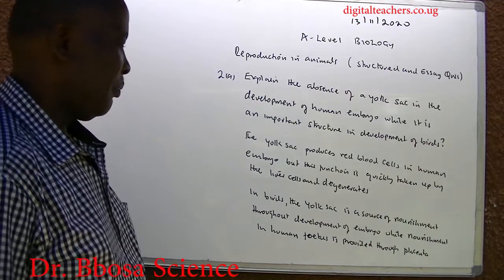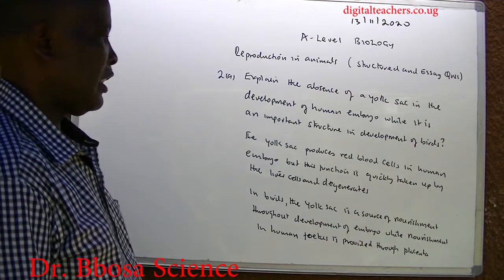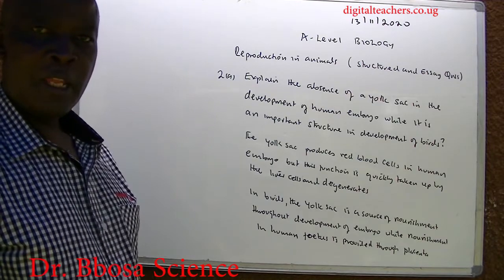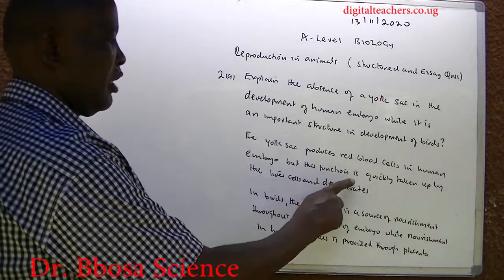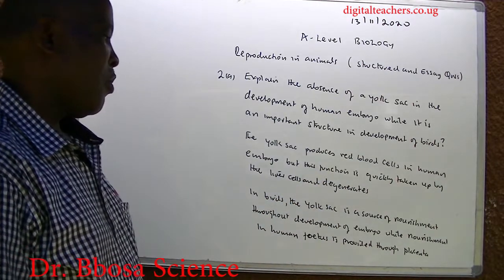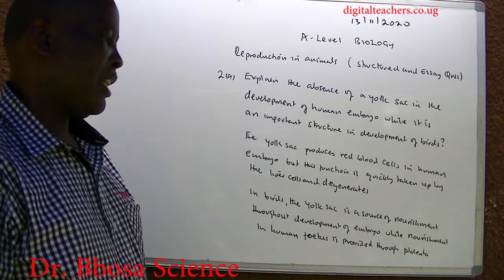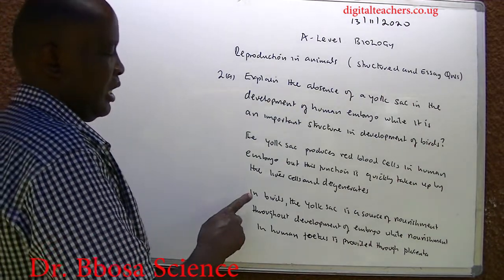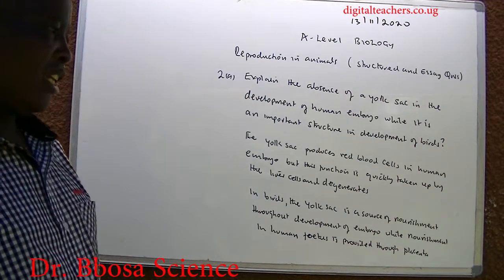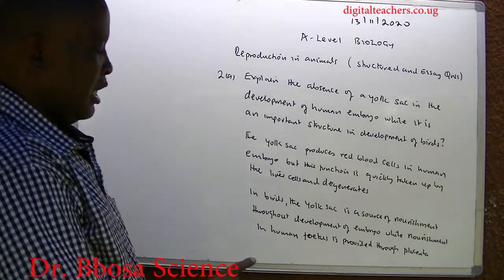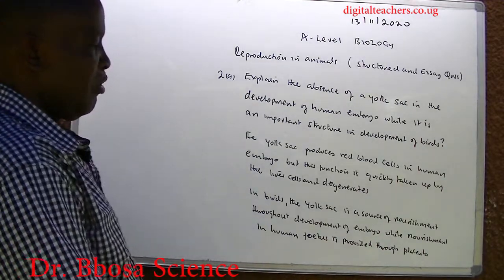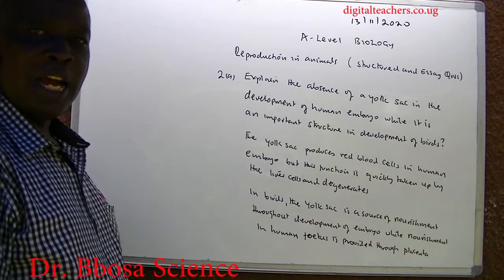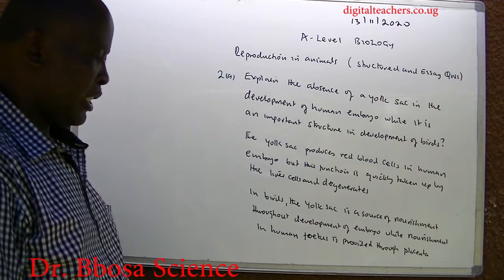The yolk sac produces red blood cells in the human embryo, but this function is quickly taken over by liver cells and it degenerates. In the bird, the yolk sac is the source of nourishment throughout the development of the embryo, so it cannot be done away with.